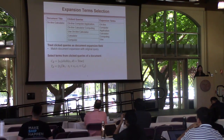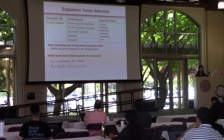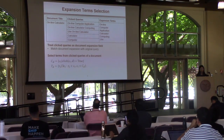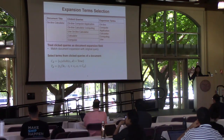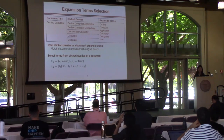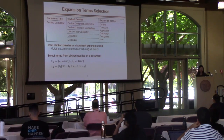Technically, how did we construct the document expansion field? The answer is by using all the click queries of a document as the expansion field. We then select expansion terms from these click queries. For example, for a document whose title is 'the online calculator', we find all click queries from the original query logs and extract the expansion terms from them.